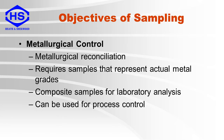The second objective for sampling is for metallurgical control. These samplers are used for metallurgical reconciliation and require samples that represent actual metal grades. This type of sampling produces composites or shift samples for laboratory analysis. These samplers can also be used for process control; however, process control samplers should never be used as metallurgical samplers.